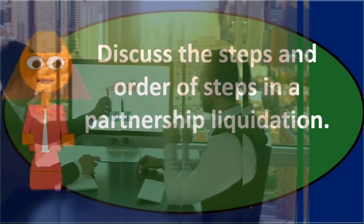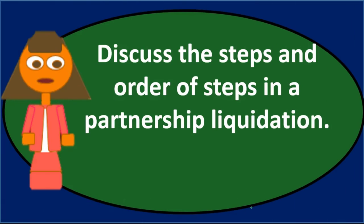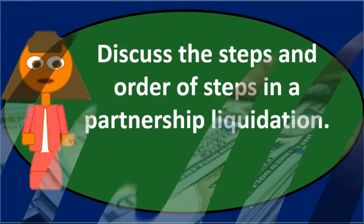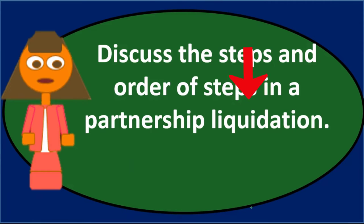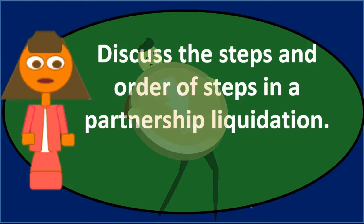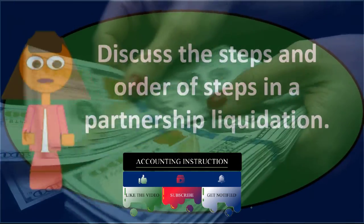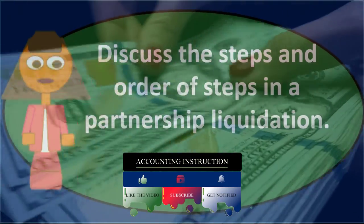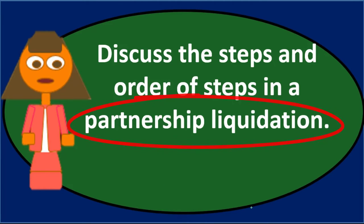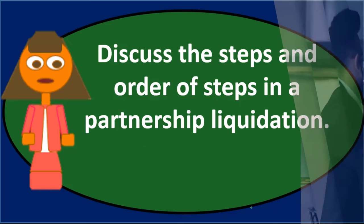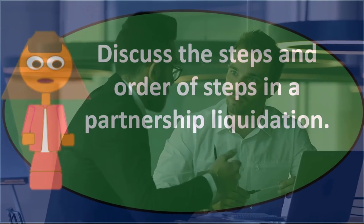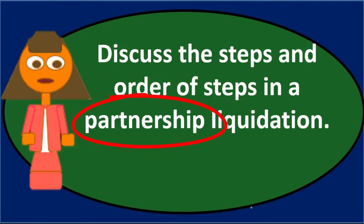If there are losses that result in negative capital accounts, we need to deal with that. This may happen because we're essentially doing a liquidation clearance sale — we might not get as much money for the assets as was on the books, resulting in a loss. Once we allocate that loss, a partner's capital account may turn negative, meaning instead of the partnership owing the partner money, the partner may owe the partnership money.